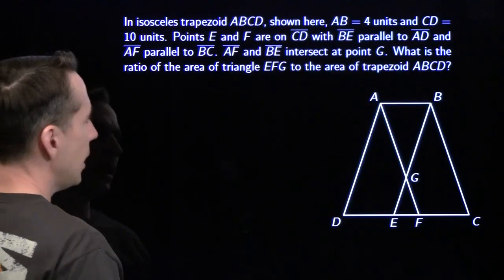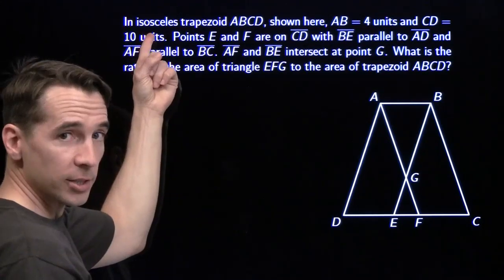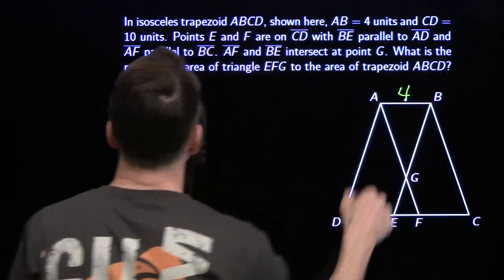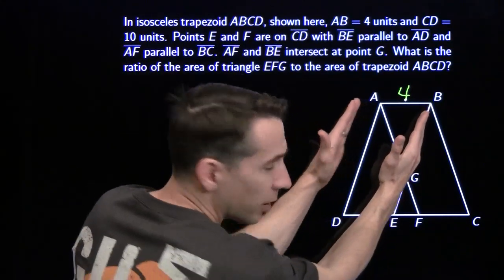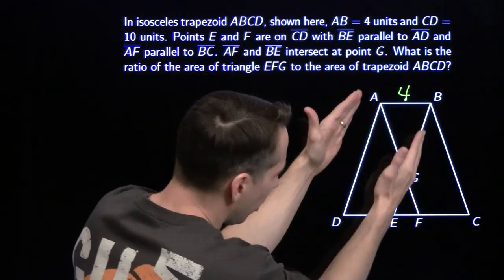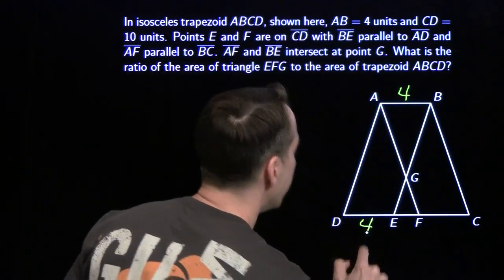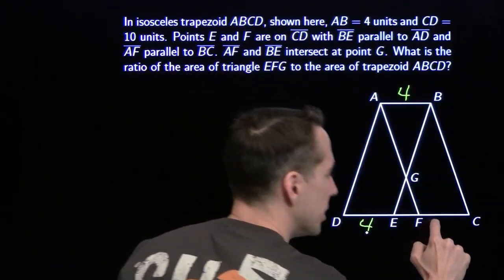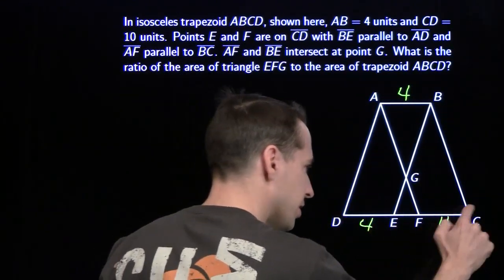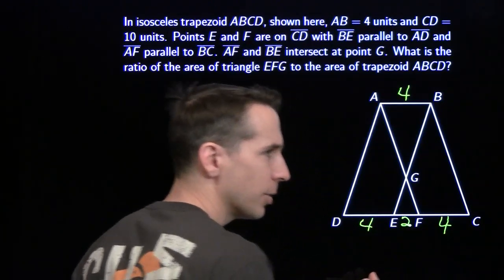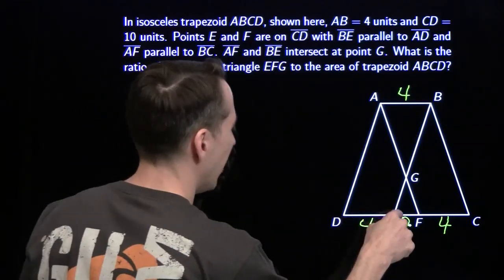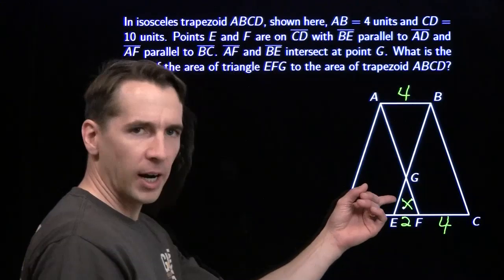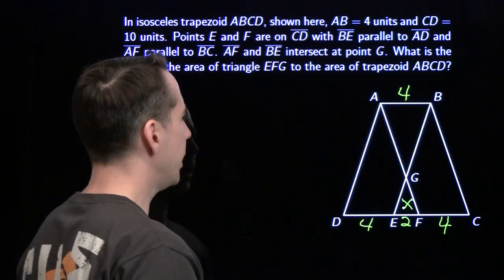On to the next problem — a trapezoid. Isosceles trapezoid, AD and BC are equal. AB is 4, CD is 10. We've got E and F down here. BE is parallel to AD, and AB is parallel to ED — this is a parallelogram. That's 4, which means this is 4 down here. We've got the same situation over here: AF and BC are parallel, another parallelogram, so this is 4 and we were told this is 10. So this little piece is 2.